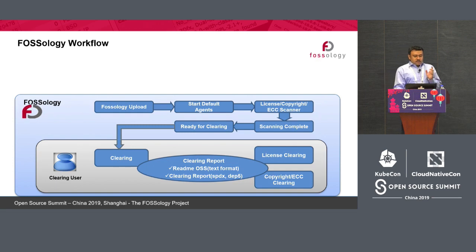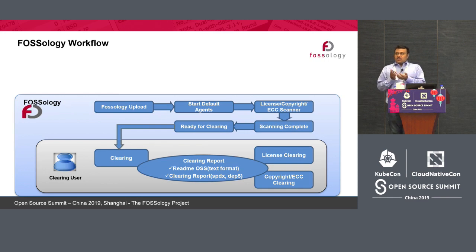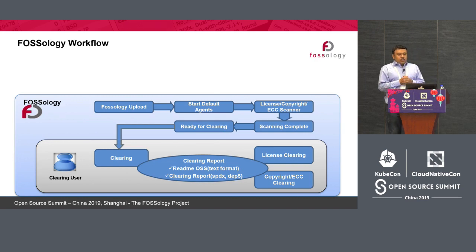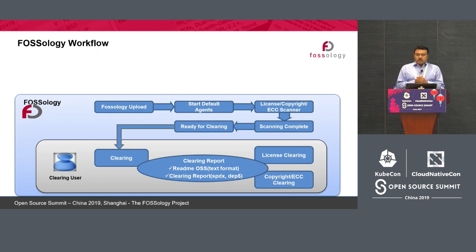This is the FOSSology workflow. It starts when you upload a package into FOSSology — packages are the software libraries. Once you upload an open source library, you can start the agents. You can choose license, copyright, ECC scanner, and all those things. Once the scan is completed, it is ready for clearing — the clearing person can review the content of the package. Once the clearing process is done, they can generate a report. Various report formats are supported, like Word and SPDX.